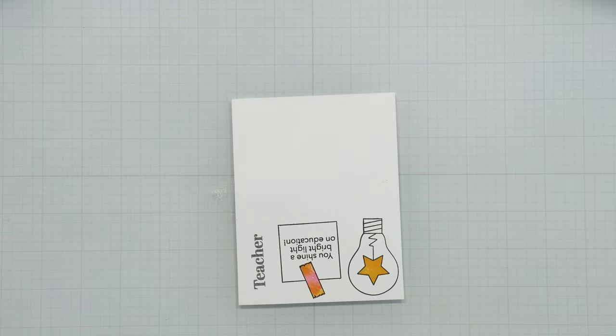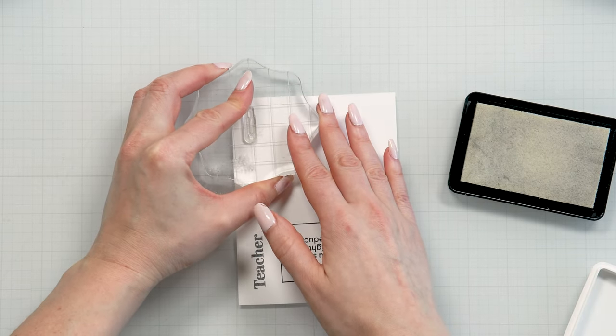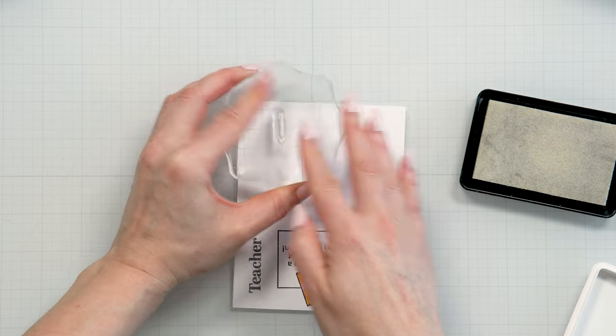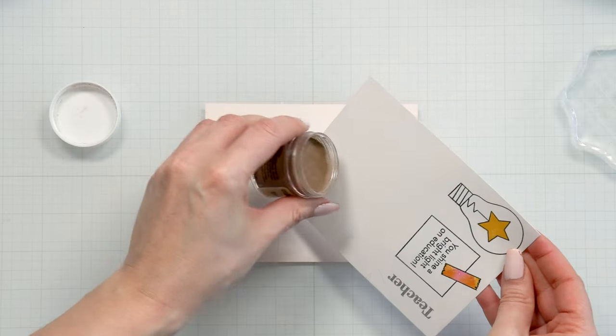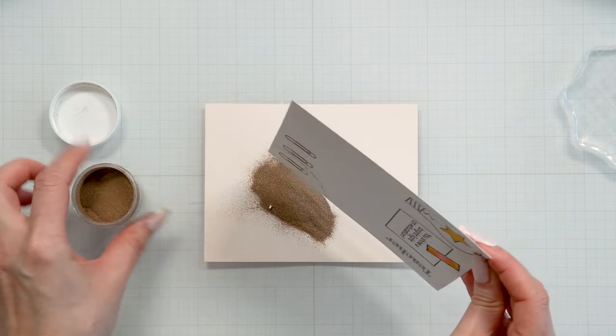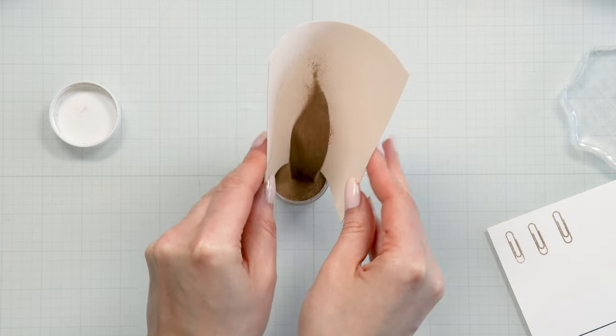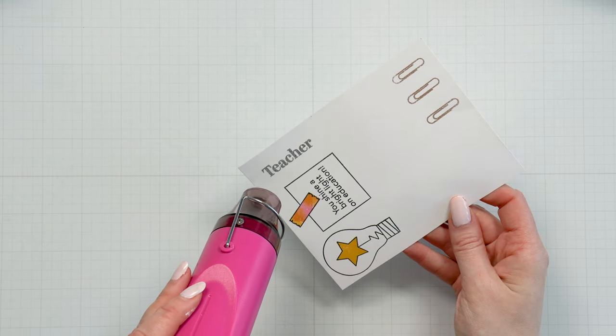Okay, I'm also going to add some paper clips onto my pattern. So here I have an image of a paper clip and I'm not using a MISTI. I'm just using a clear block because with a small image like this, I find it's actually easier and faster to stamp it using a clear block. So I have treated my paper with an anti-static powder tool. I then stamp the paper clips using clear embossing ink and I'm going to emboss them using the Simon Says Stamp Antique gold embossing powder.